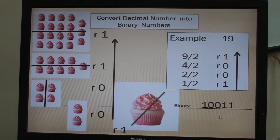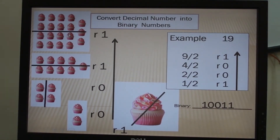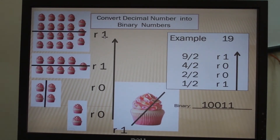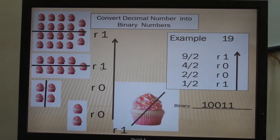Another set of examples. I have 19 cupcakes, so we will convert 19 into binary. 19 divided by 2 is 9, but there is a remainder 1. Then 9 divided by 2 is equal to 4, and still there is a remainder 1.